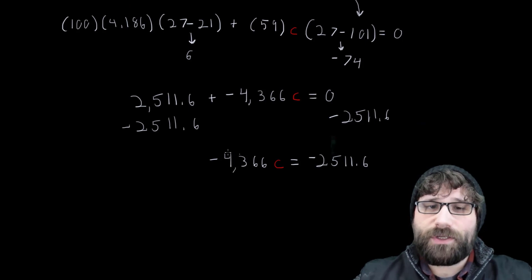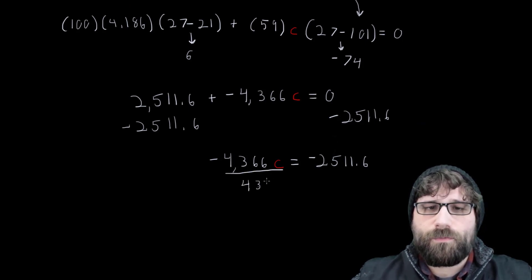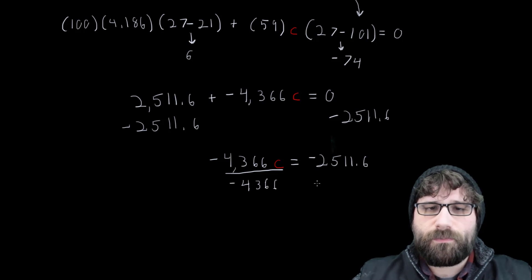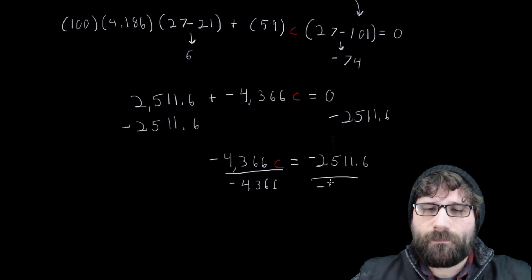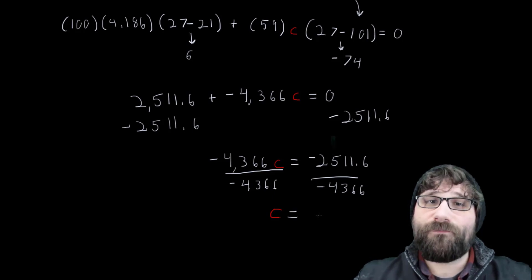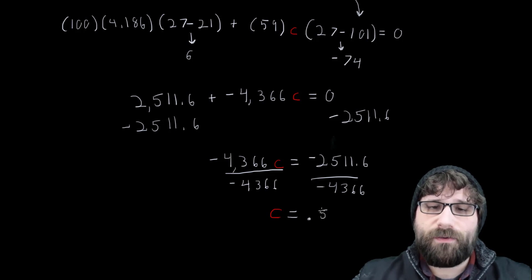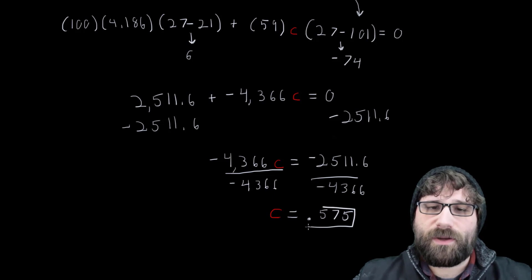Now to get my final value of C, I just divide both sides by my negative 4,366. And when I run that final calculation, I get my specific heat being equal to 0.575. And that's my final calculation.